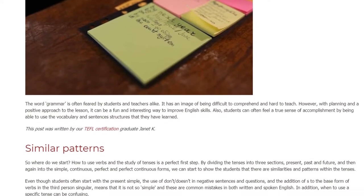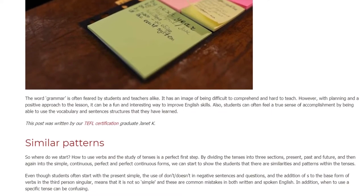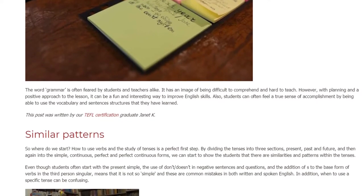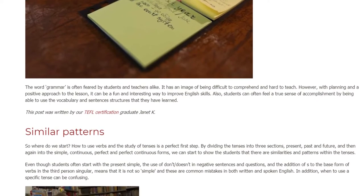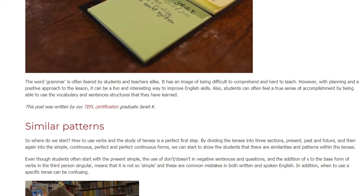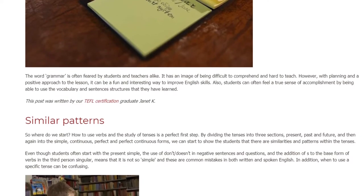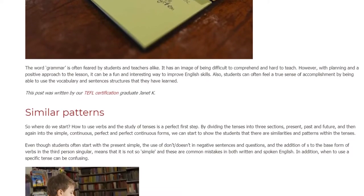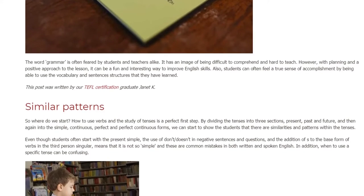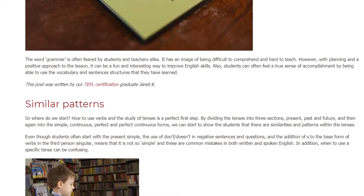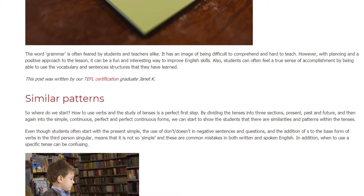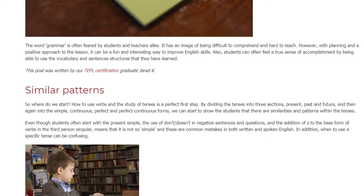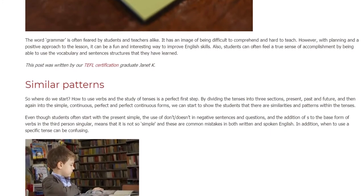Similar Patterns. So where do we start? How to use verbs and the study of tenses is a perfect first step. By dividing the tenses into three sections — present, past, and future — and then again into the simple, continuous, perfect, and perfect continuous forms, we can start to show the students that there are similarities and patterns within the tenses.